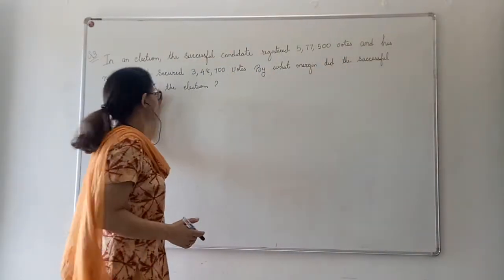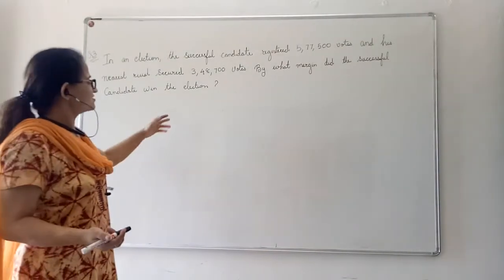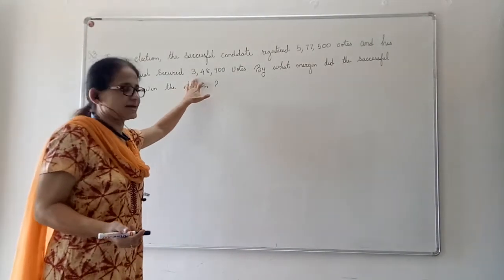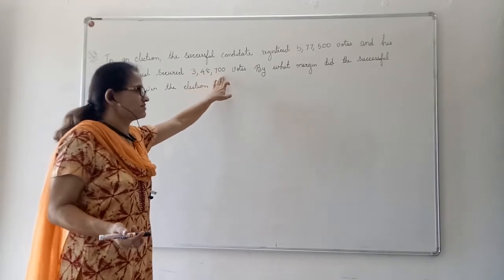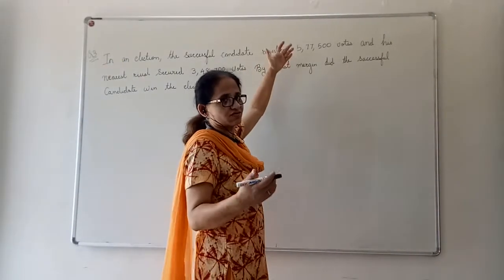And its nearest rival, nearest rival of BJP is Congress. For instance, Congress got 3,48,700 votes. BJP got more votes, so they won the election.